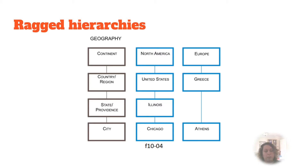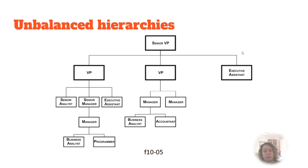The other branch has continent Europe, country Greece, and then city Athens — because there are no states in Greece. If there is a limited number of levels and gaps in the hierarchy, the pragmatic approach to handling aggregated data is to treat it as a balanced hierarchy.